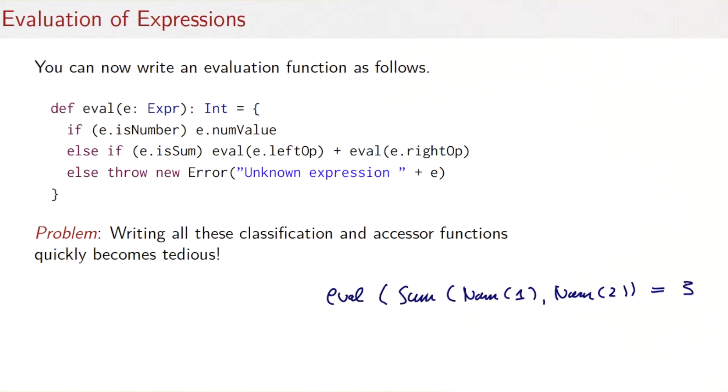So how would I write an evaluation function like that? Well, one way to do that would be to simply ask, given an expression, what it is. So we ask the expression, is it a number? If yes, then we can return the numeric value of that expression. Otherwise, if the expression is a sum, then we take its both two operands, the left operand and the right operand, and we evaluate both of them using eval.